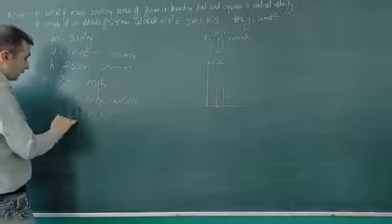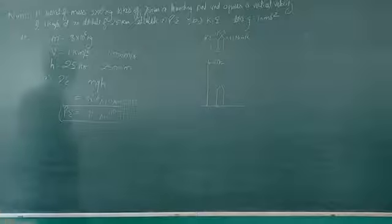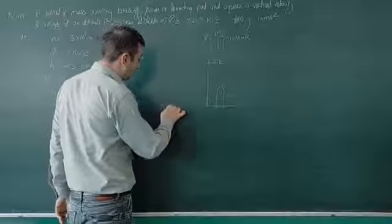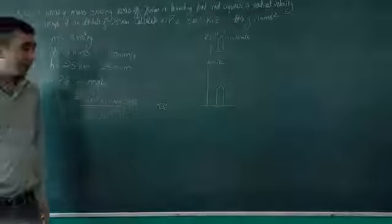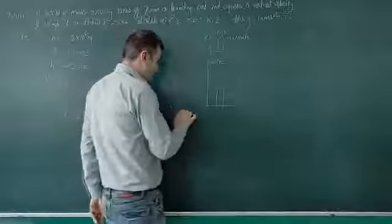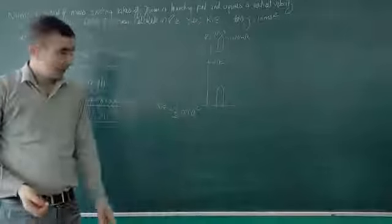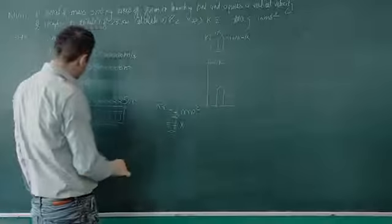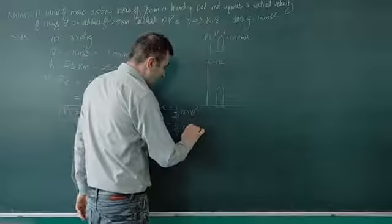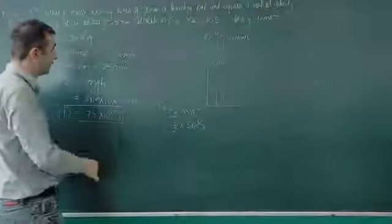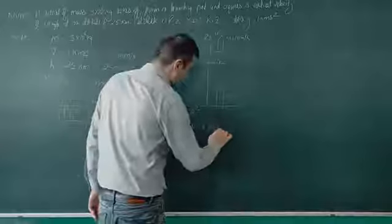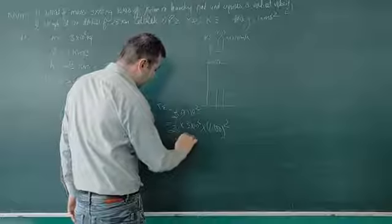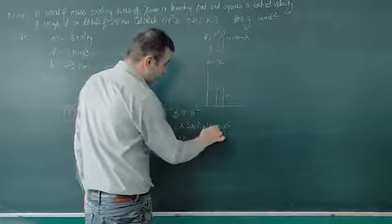Now for kinetic energy, the formula is 1/2 MV squared. So we have 1/2 times 3 times 10 to the power 6, and velocity is 1000 meters per second.